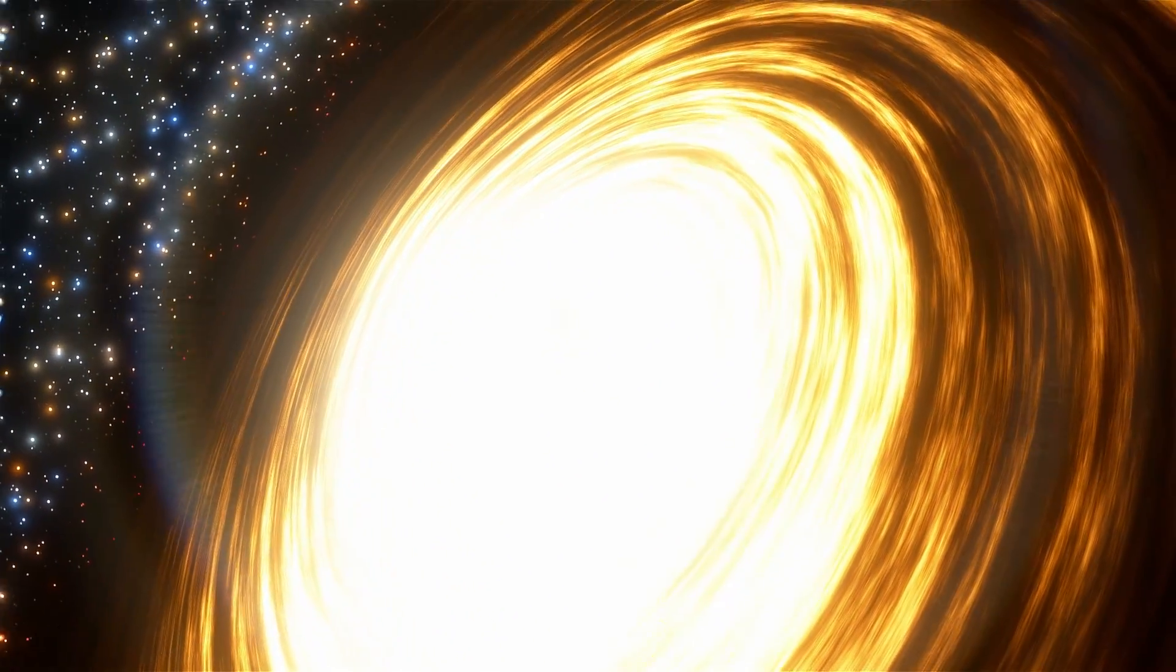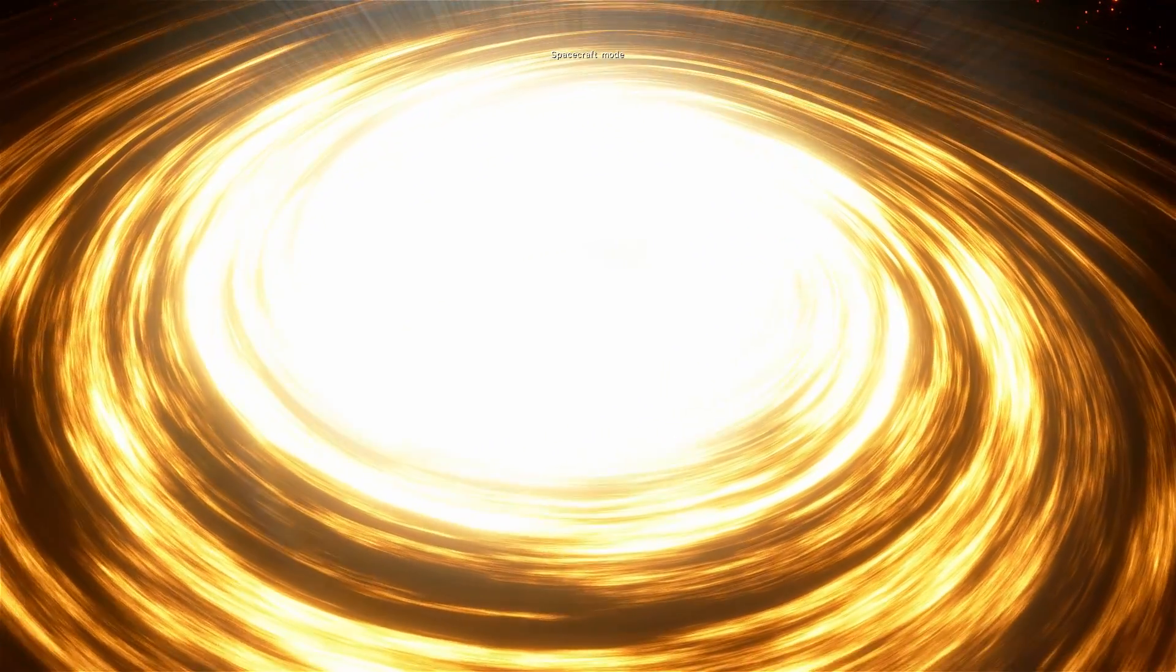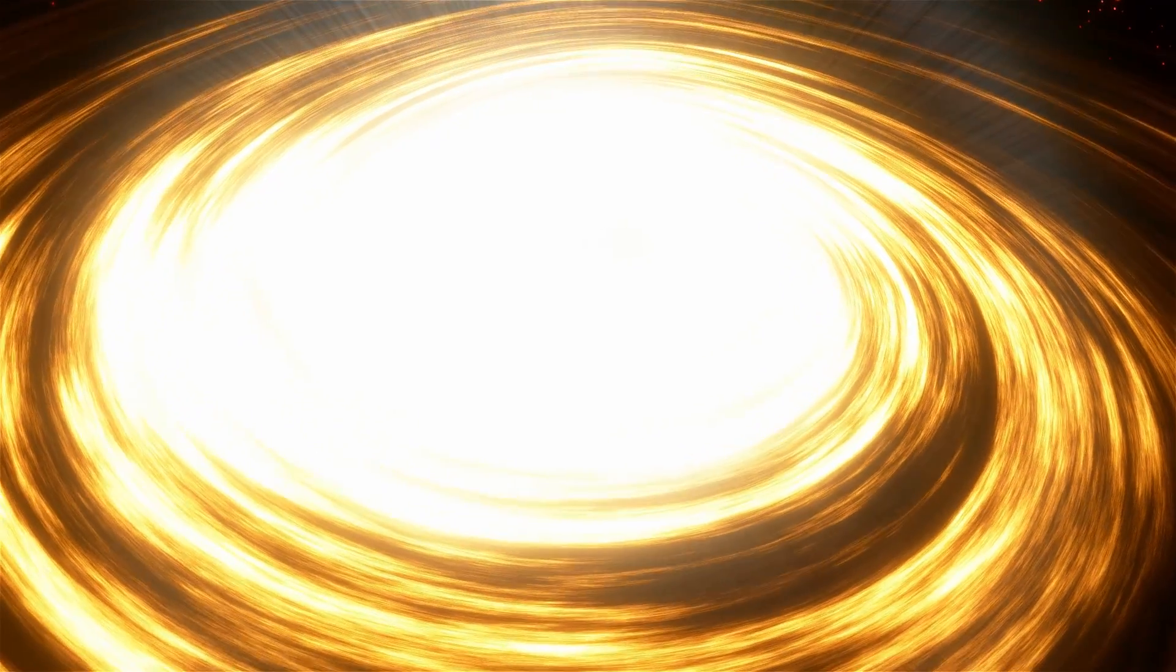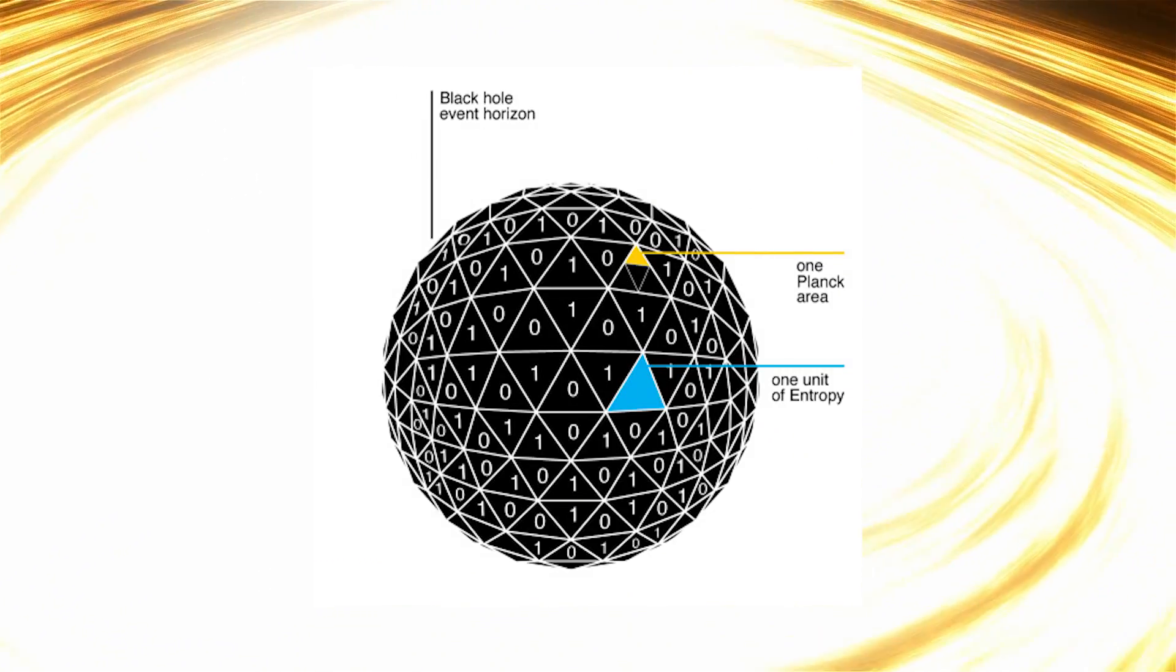Over time, as the black holes collect this information, today some scientists speculate that all of this information is somehow stored on the surface and basically this three-dimensional information is turned into two-dimensional information, and in a sense it becomes kind of like a hologram on the surface of a black hole.